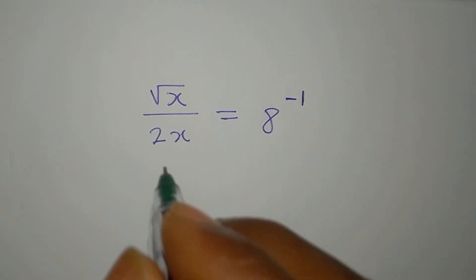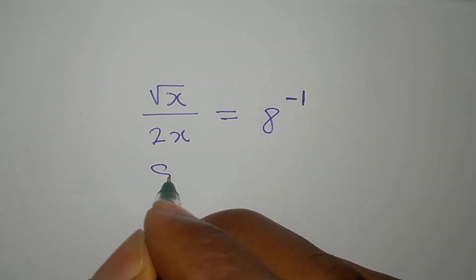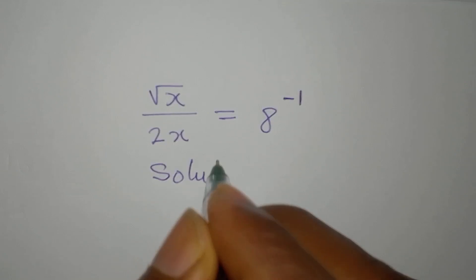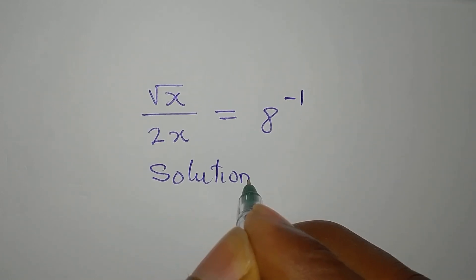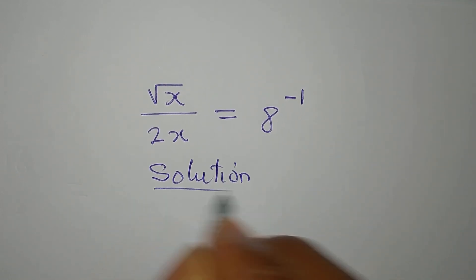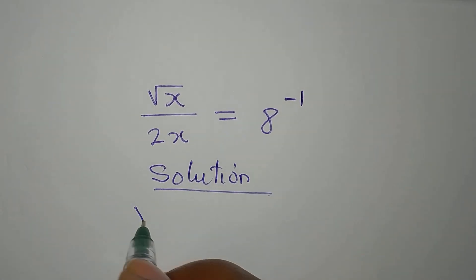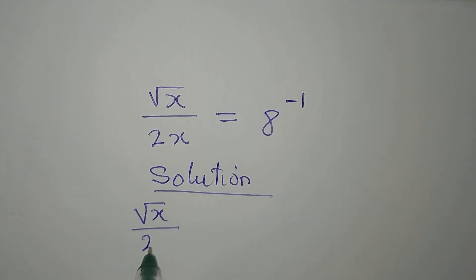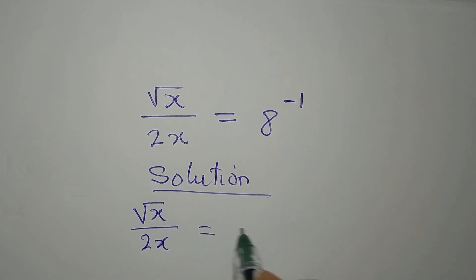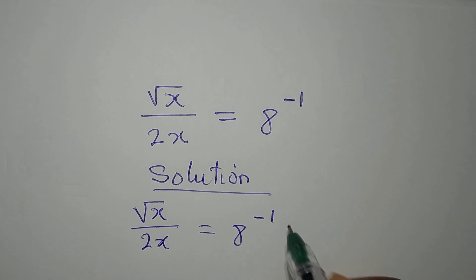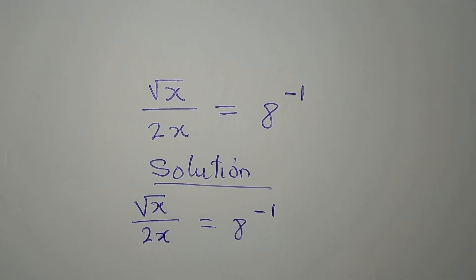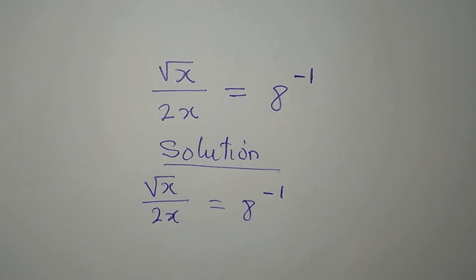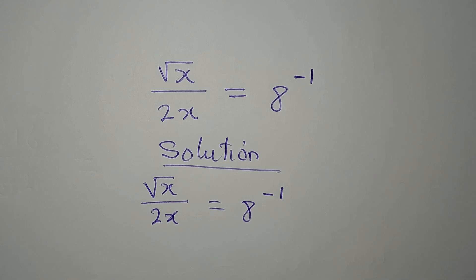Hello everyone, let's provide a solution to this problem very quickly. The equation is square root of x over 2x equals 8 to the power of negative 1, and I want us to deal with this in two ways.